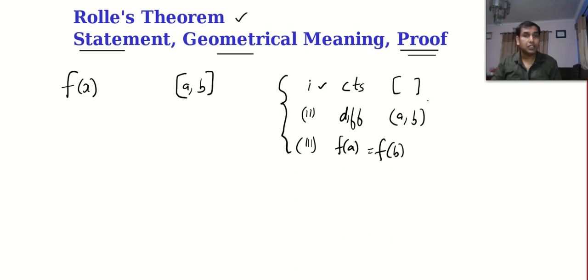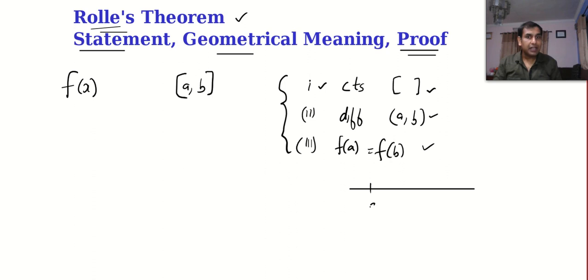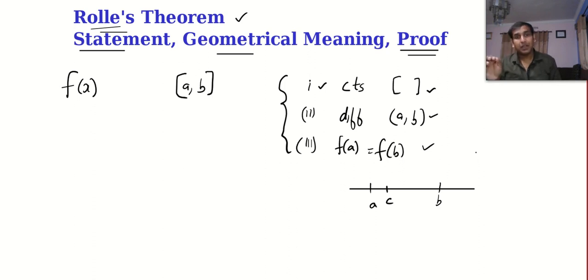If you ever have a function which satisfies all three conditions that Rolle has stated, then in between a and b, there will be at least one point — at least means minimum — such that the derivative will vanish at that point.